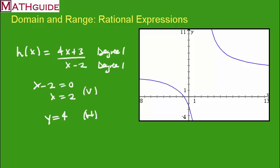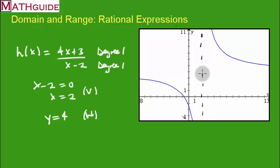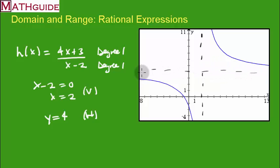Looking at the diagram, we can identify x equals 2 as the vertical asymptote. If you zoom out on the graphing calculator, it's clear the curve is asymptotic to x equals 2. At y equals 4, there's a horizontal asymptote as well. Both asymptotes match our algebraic results.